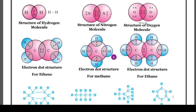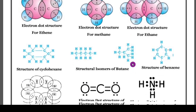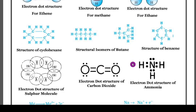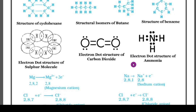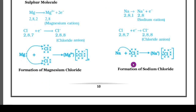The next important topic is dot structures — you have to practice all the dot structures. Here I have given the structure of cyclohexane, the structure of isomers of butane, and the structure of benzene. Everything must be practiced carefully. All the diagrams and dot structures are given together, so instead of searching in your textbook, by watching this video you can easily score 45 marks.